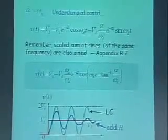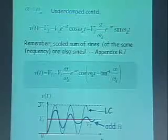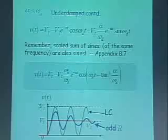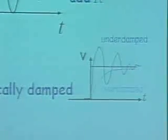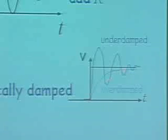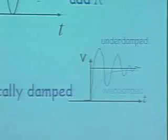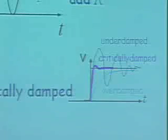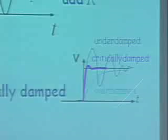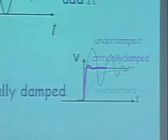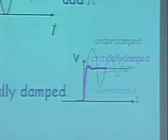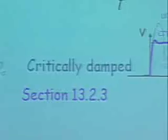The critically damped case — when α = ω₀ — I am not going to do here; I will point you to Section 13.2.3. To summarize: the underdamped case is a decaying sinusoid; the overdamped case rises smoothly like a sum of exponentials; and the critically damped case goes up and then settles down almost immediately, kind of in the middle between the two. I will also point you to Section 13.6 for details.